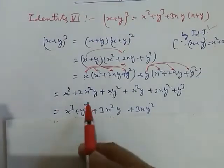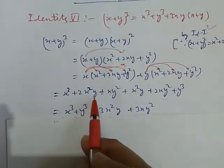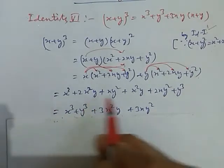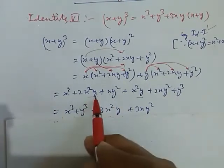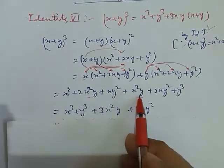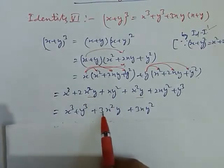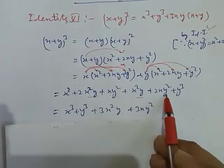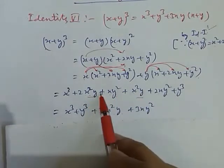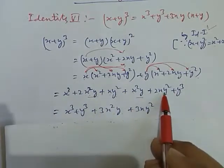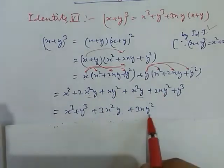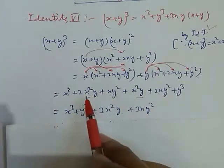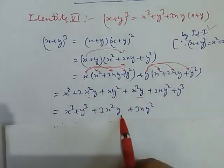Now check — add the similar terms. Here we check that x squared y and x squared y are the similar terms, so we add them and write 3x squared y. This xy squared and this xy squared are similar terms having the same sign, so we write these as 3xy squared. And this y cube here. First we write the highest powers. This is 3 and this is 3, so we put highest powers here, then the lower power — we write the expression in descending order.